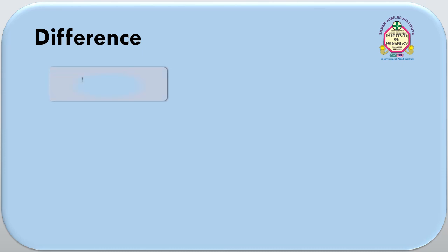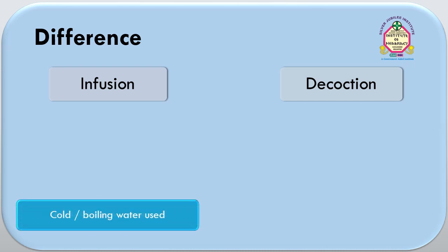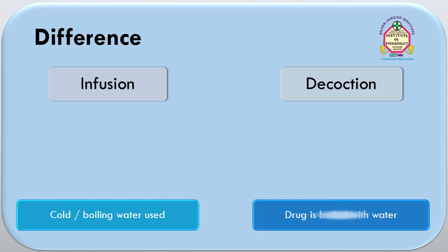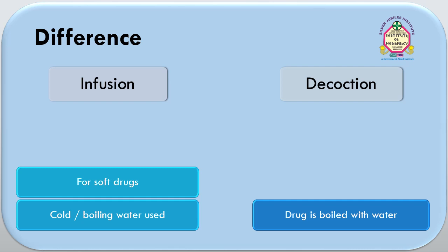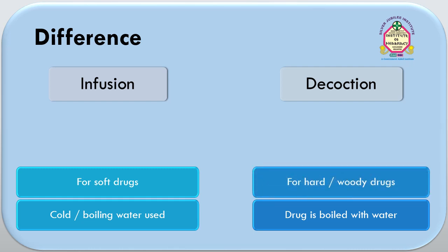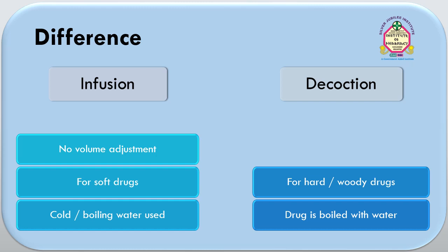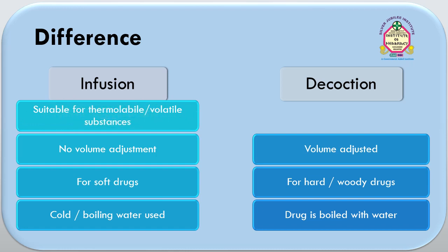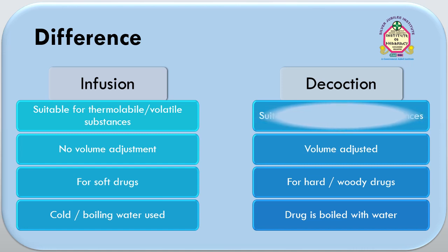Now we will discuss the differences between infusion and decoction. In infusion, the menstruum used is either cold or boiling water, while in decoction the drug is boiled with water. Infusion is preferred for soft drugs, while decoction is used for hard or woody drugs. In infusion, final volume is not adjusted, while in decoction the final volume of extract is adjusted. Infusion is suitable for thermolabile as well as volatile substances, while decoction is not suitable for thermolabile and volatile substances — it is only suitable for thermostable substances.